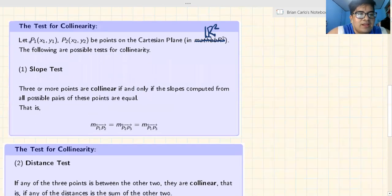Test for collinearity. I want to correct this - the R2 symbol should be properly formatted as the mathematical symbol for the Cartesian plane. Now let's dive into the test of collinearity.